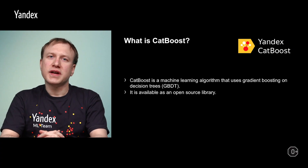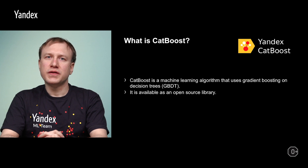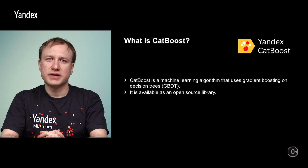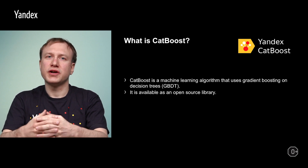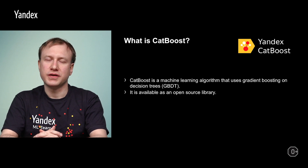For those who are interested in the mathematical and algorithmic foundations of CatBoost, you can find the relevant papers on our website catboost.ai. CatBoost is a machine learning algorithm that uses gradient boosting on decision trees, or GBDT. We will briefly recall the basics of GBDT in the next few slides. And it is available as an open source library with a permissive Apache 2 license, so it is both free as in freedom and free as in beer.